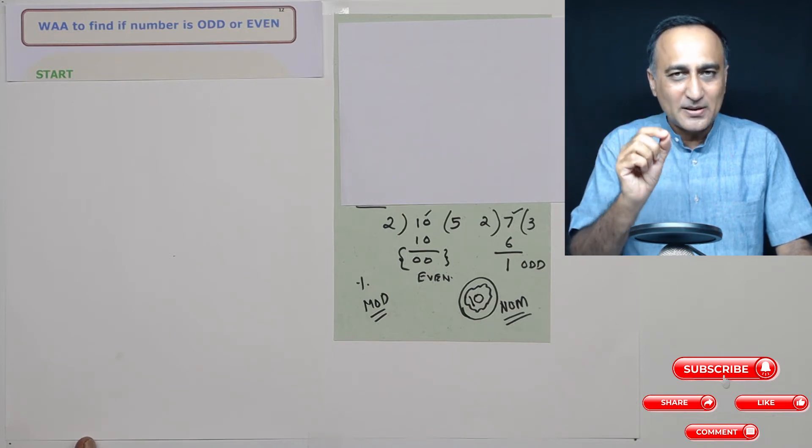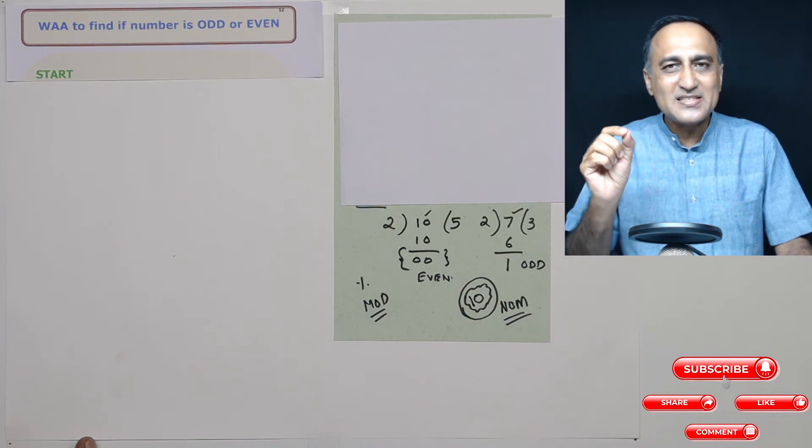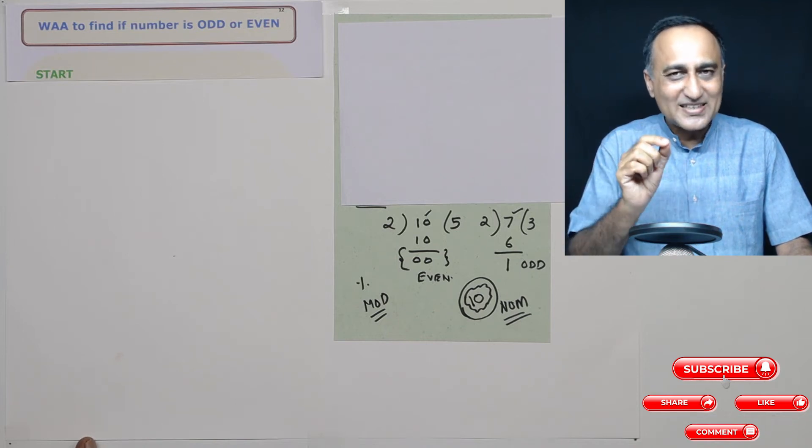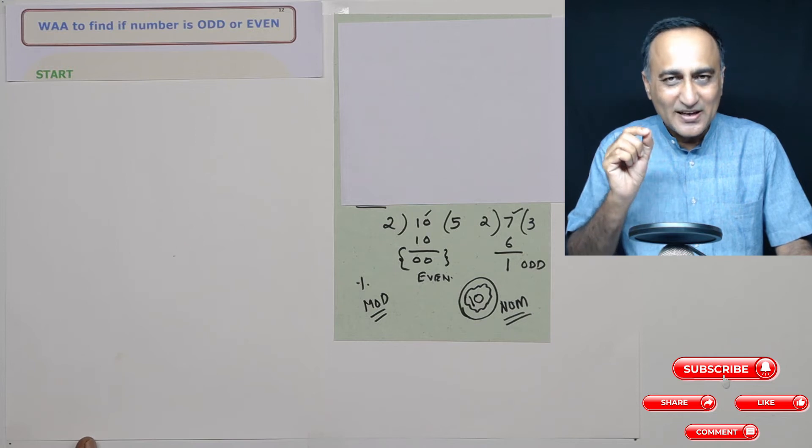that means if you take the number divided by two, if the remainder is zero, then that number is an even number. Otherwise, or else the number is not an even number.